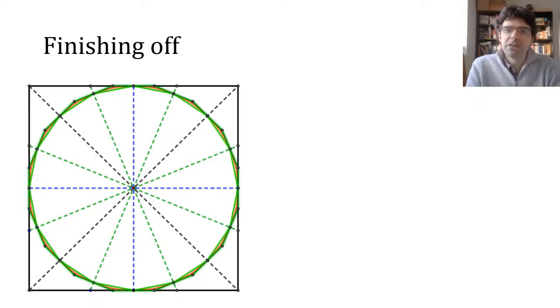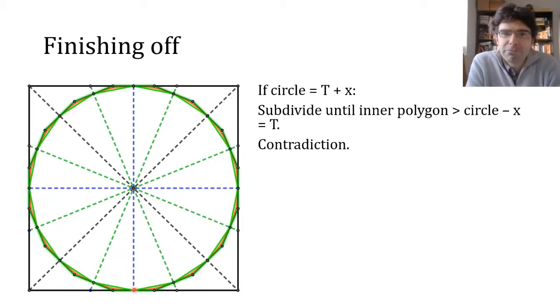Suppose first that the circle's area is any proper amount x bigger than T, remember that's the area of that target triangle. And by a proper amount, I'm referring to Archimedes' assumption that areas are never infinitesimally small. In other words, if you get enough copies of x, you're going to be able to add them up to make as big an area as you like.